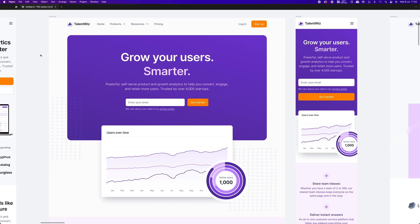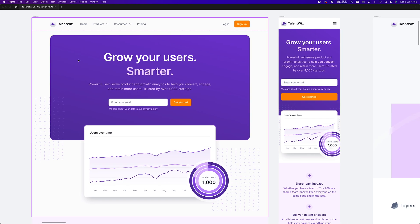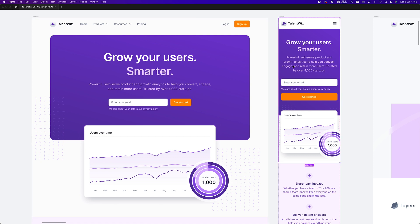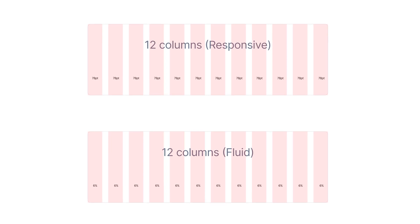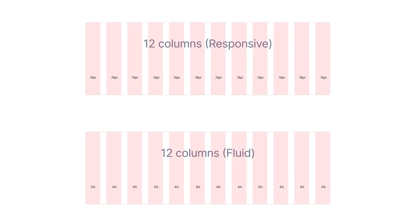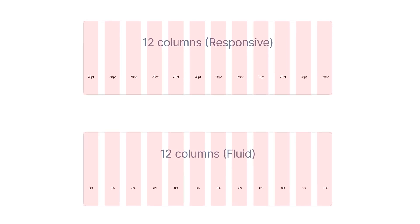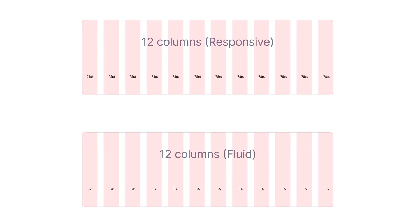The elements of the user interface contract, expand and rearrange based on the available space. Fluid design uses a similar concept, but instead of defining pixel values, it works with percentages in relation to other user interface elements. So, rather than a container with a defined size dependent on the given breakpoint, it has a percentage value relative to other elements.